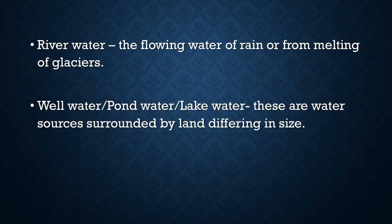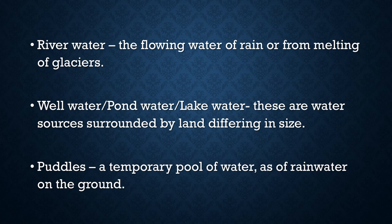Well water, pond water, lake water — kuen ka paani, talaab ka paani, jheel ka paani. These are water sources surrounded by land, different in size. Puddles — a temporary pool of water, as of rainwater on the ground. Chhote gadde ban jaate hain zameen pe kuch samay ke liye — jaise baarish mein — unhe hum puddles kehte hain.